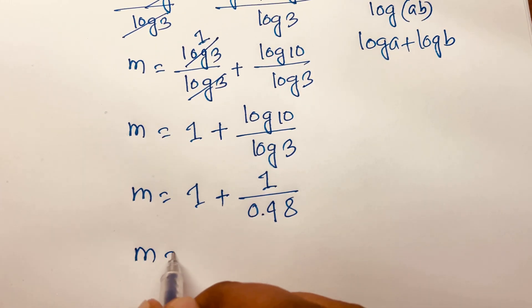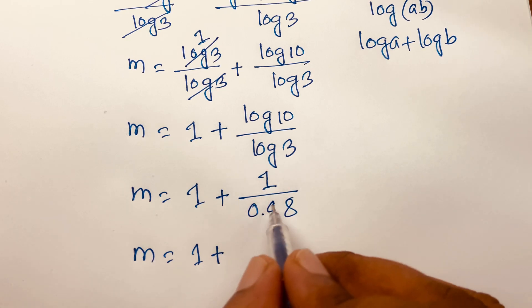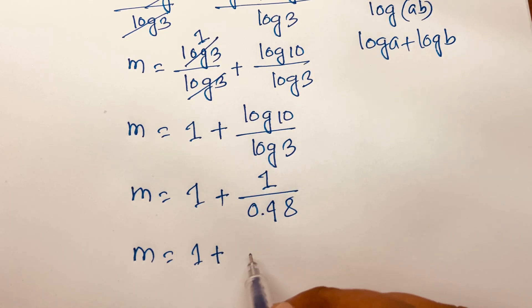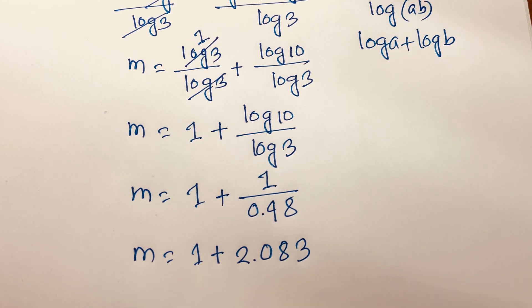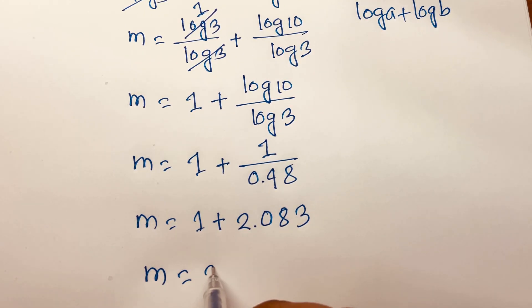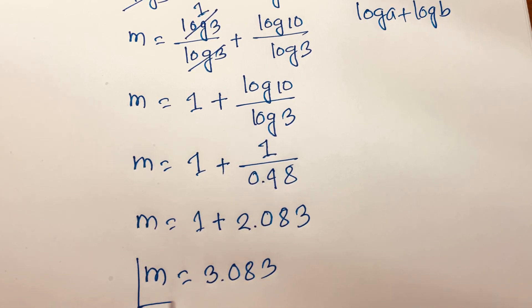So m equals 1 plus 1 divided by 0.48, which equals 2.083. If I add, we'll find it equals 3.083. This is our final answer.